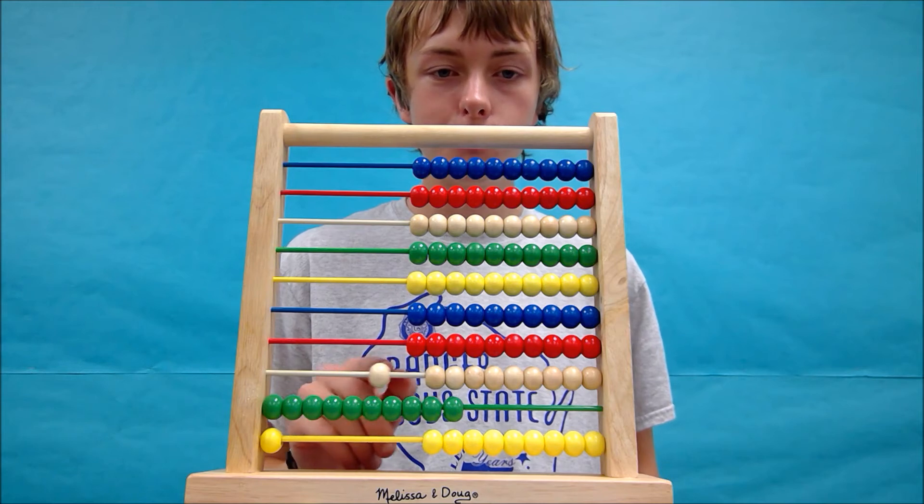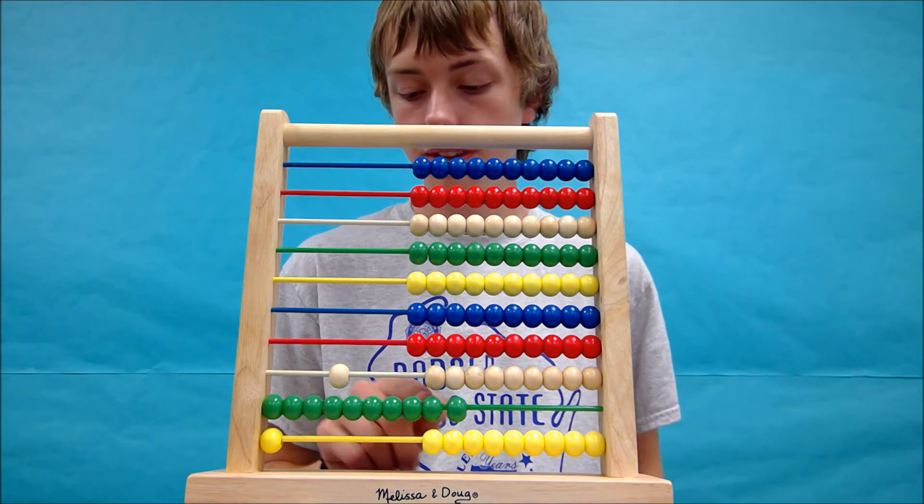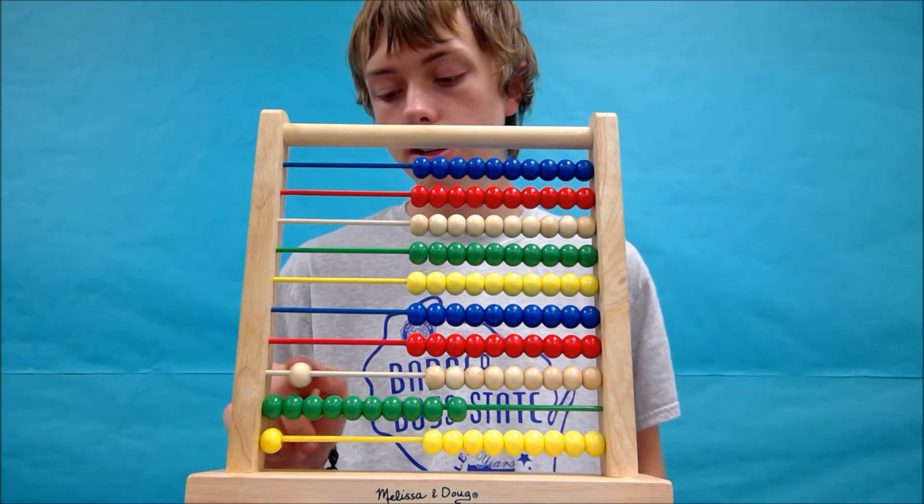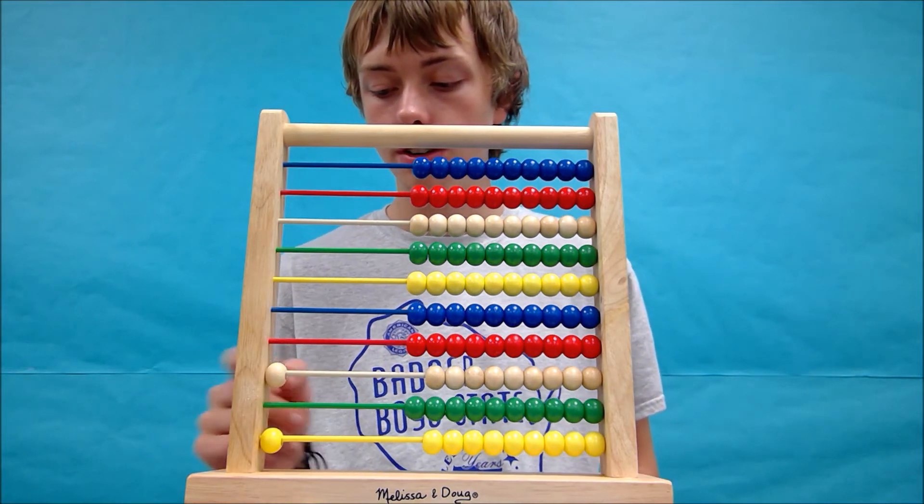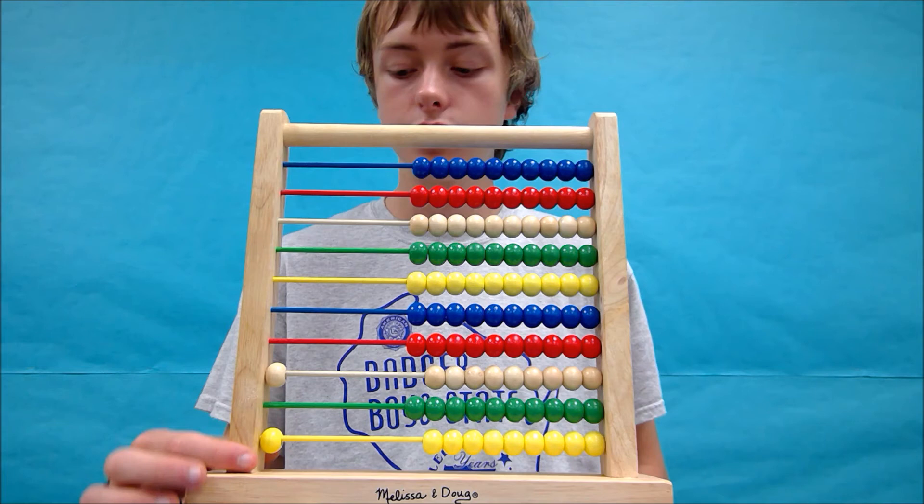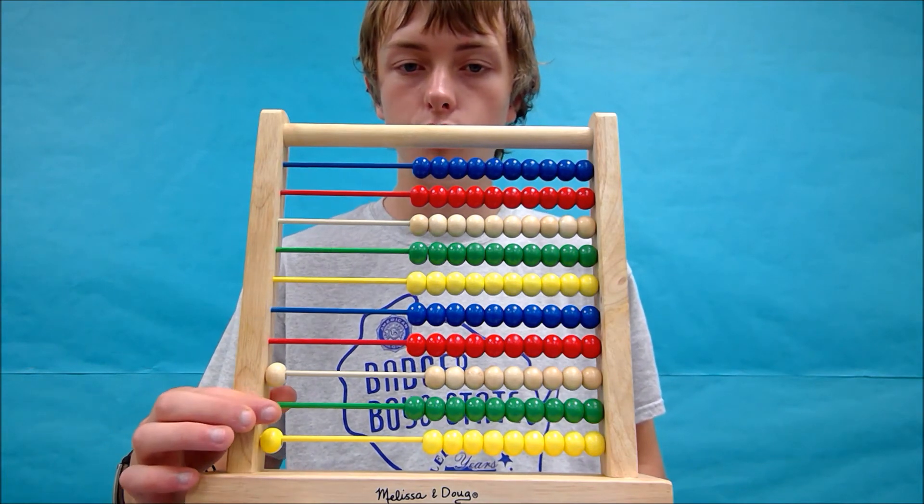And now, like I said before, we can do this up here with the hundreds and tens row. So one 100 bead equals 10 10 beads. If we move these back, this over, we have the same thing, just now we have more tens we can move back over.